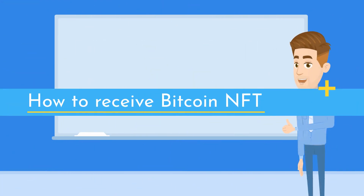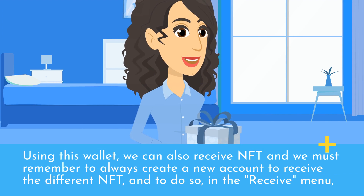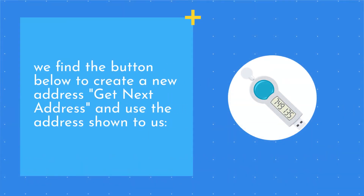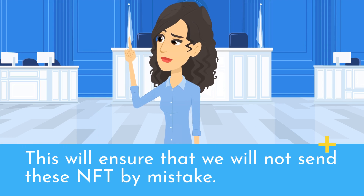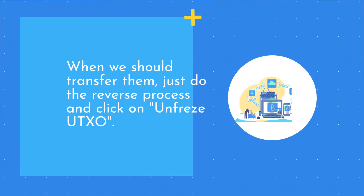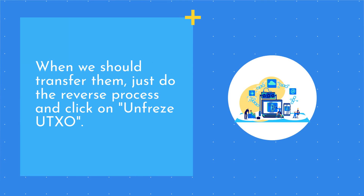How to receive Bitcoin NFTs? Using this wallet, we can also receive NFTs. We must remember to always create a new address to receive each different NFT, and to do so, in the Receive menu, we find the button to create a new address — Get Next Address — and use the address shown to us. To protect received NFTs, we should freeze the UTXOs related to the NFT: right-click on the related transaction, then click Freeze UTXO. This ensures we will not send these NFTs by mistake. When we want to transfer them, just do the reverse process and click Unfreeze UTXO.